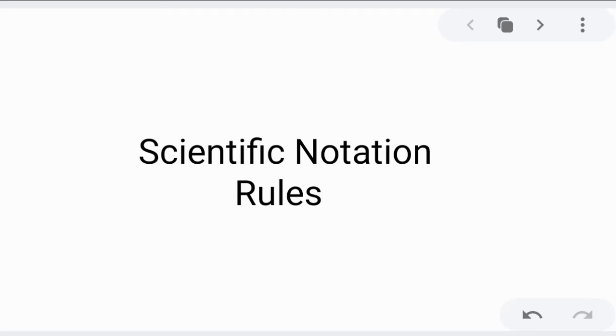Scientific notation is the simplest and easiest way of writing down very small and very large numbers using powers of 10 in exponential notation. The exponent tells the number of times the decimal point is moved from its original place to the right, or from the original place to the left. To easily understand this rule, let's see the general rule.